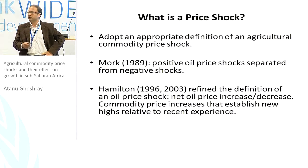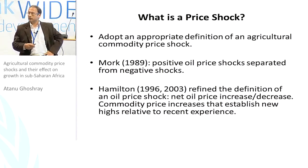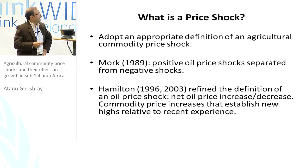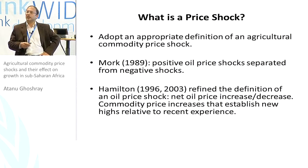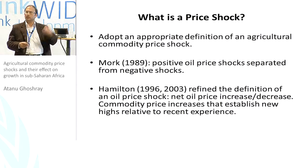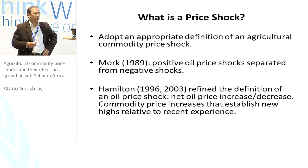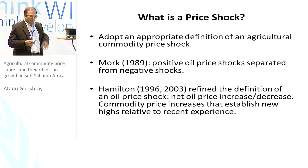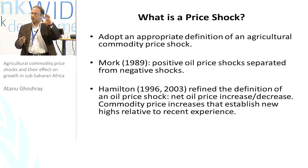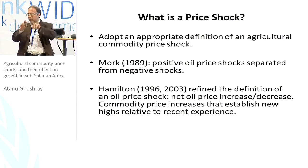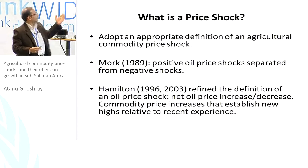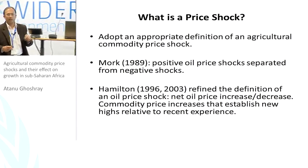Killian and Vigfusson have been using this type of study quite extensively. Hamilton, in 1996 and again in 2003, refined the definition of the oil price shock by talking about a sustained increase in oil prices — what he calls a net oil price increase or decrease — and what sort of effect that has on the US macroeconomy. Hamilton chooses the current oil price and measures it against a certain recent period; if that current price is greater than the oil price over that short interval, that is considered an oil price shock — essentially, commodity price increases that establish new highs relative to recent experience.